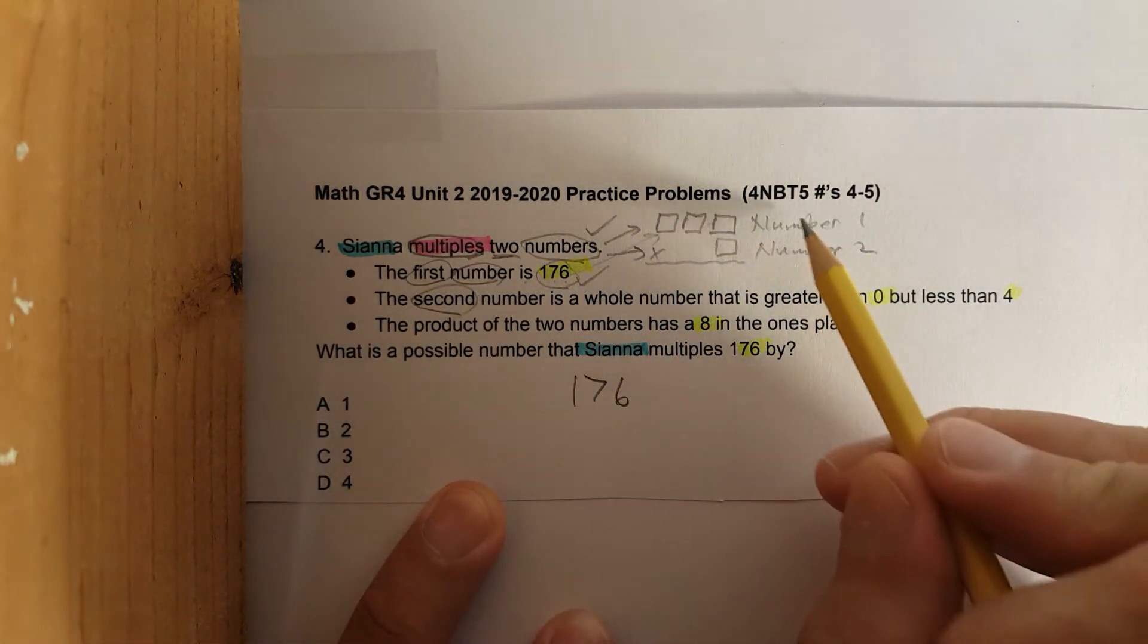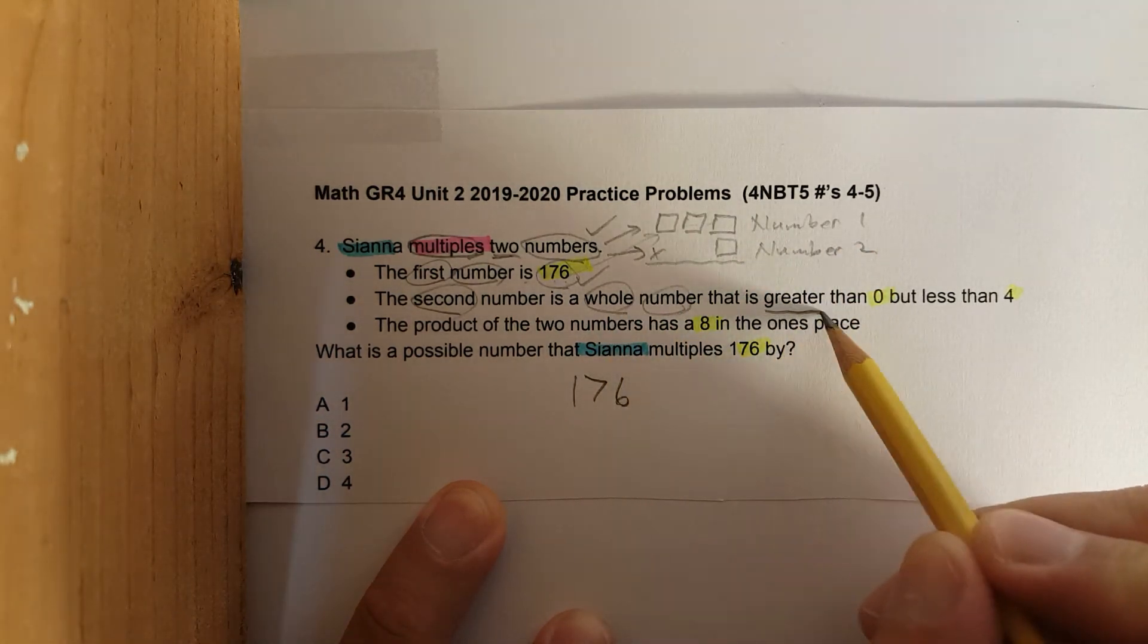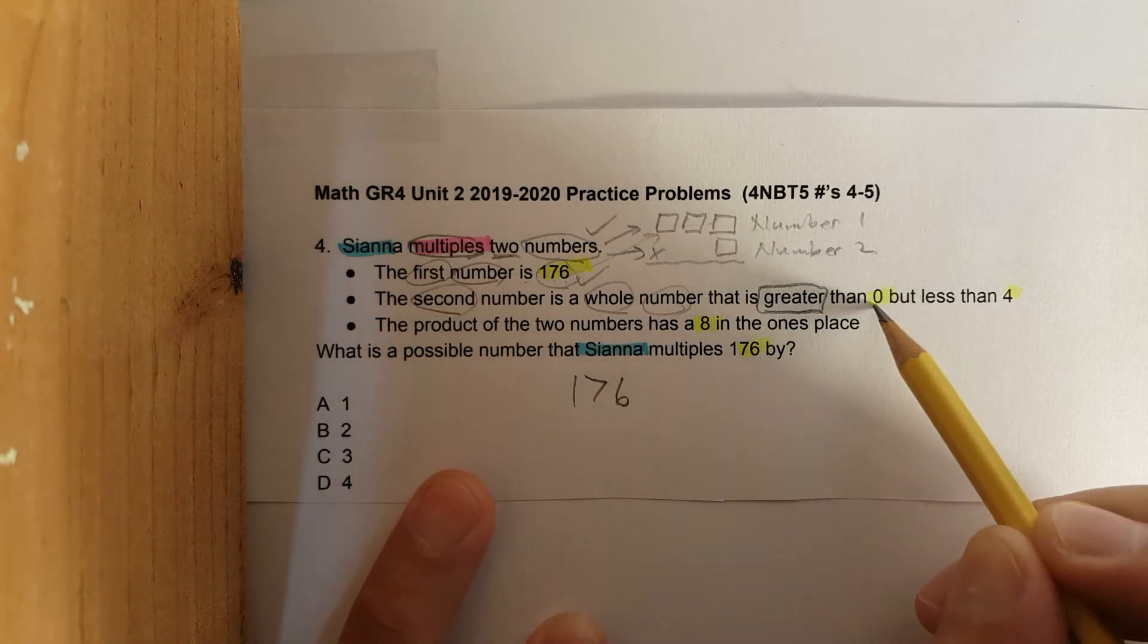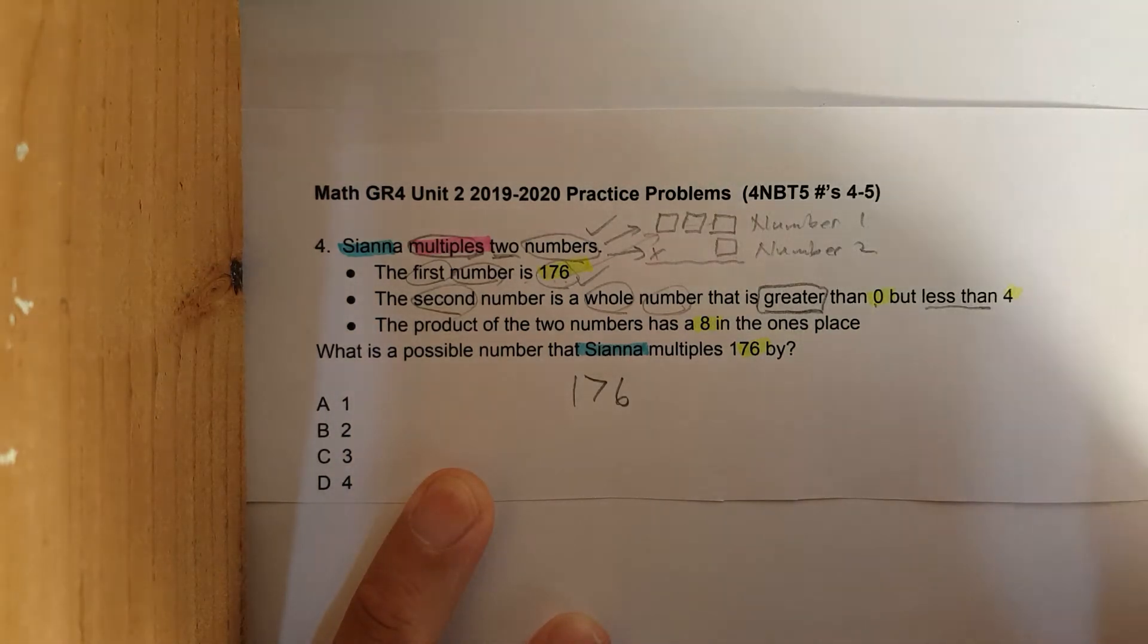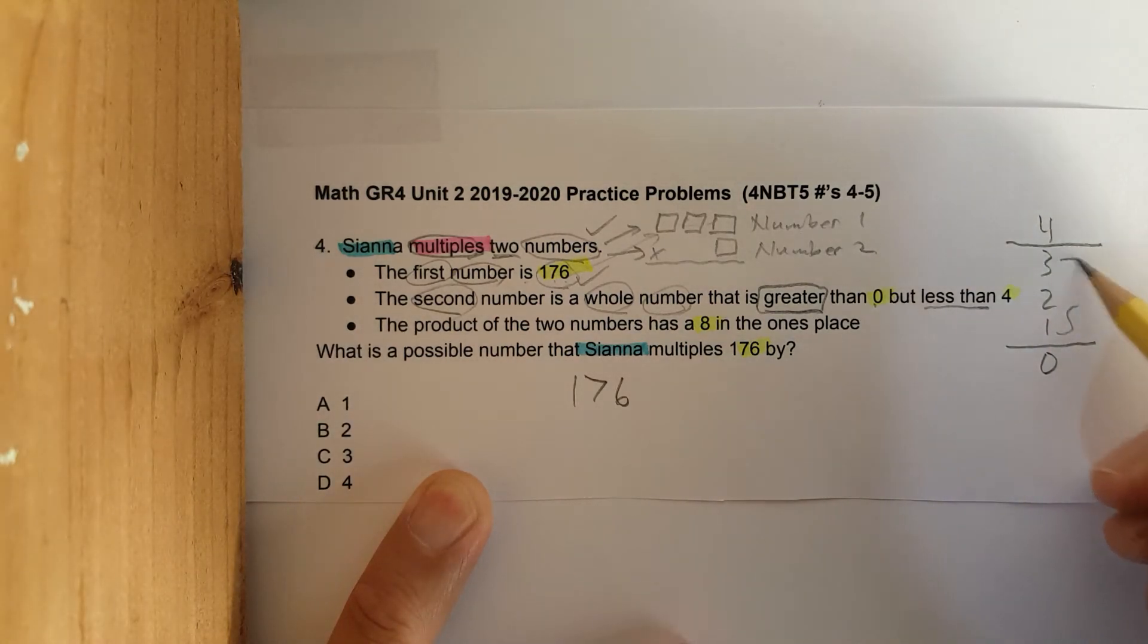The second number is a whole number that is greater than zero but less than four. So if we'd write it: four, three, two, one, zero, these are the three whole numbers. Whole number options. Sorry I got cut off. It says whole number. So we have to pick three, two, or one.